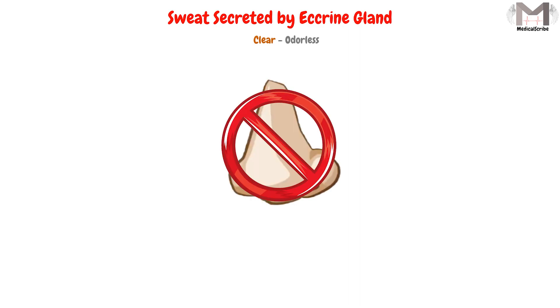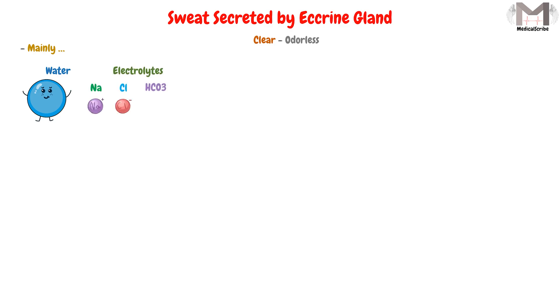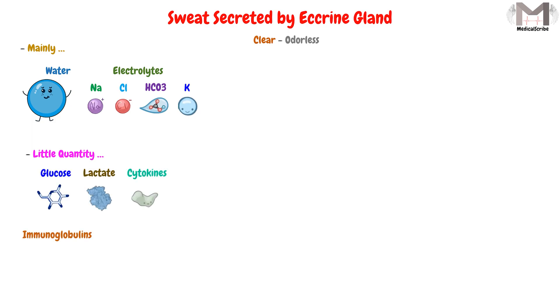The sweat secreted by the Eccrine glands is clear and odorless. It is composed mainly of water and electrolytes such as sodium, chloride, bicarbonate, and potassium. It also contains a small quantity of glucose, lactate, cytokines, and immunoglobulins. It has also been discovered that sweat contains an antimicrobial peptide called dermcidin.